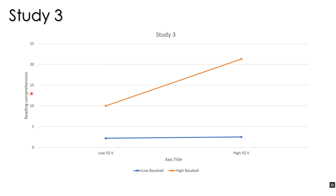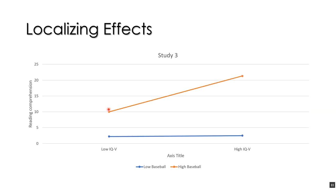Let's look at an example to clarify this — study three from last week. This study looks at reading comprehension as the dependent variable, examining students with low or high verbal IQ, and low versus high baseball knowledge. Between low and high verbal IQ there's pretty much no difference in reading comprehension if you have low baseball knowledge. However, there is a difference between low and high verbal IQ if you have high baseball knowledge — because the reading passage was about baseball.